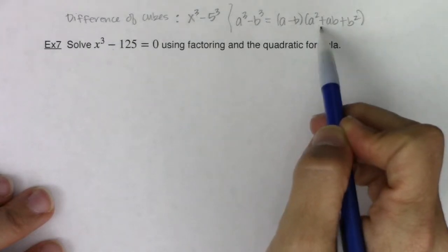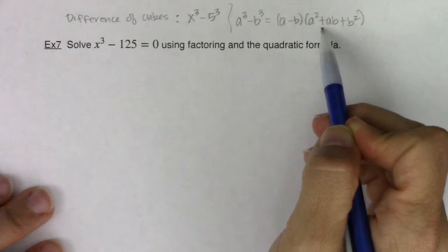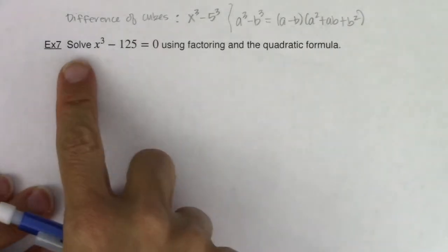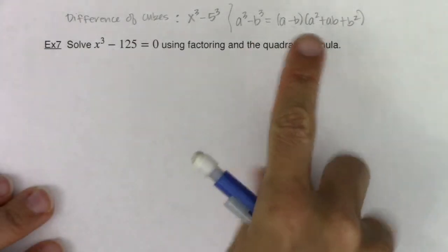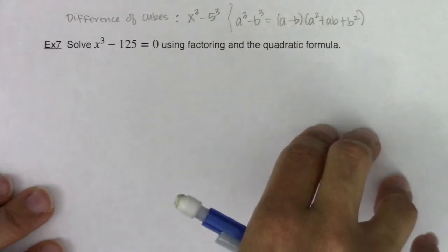And then both of these become prime. There's no way to factor them further than what we have here, which is not to say we can't solve them. We just won't be able to use factoring anymore. We'll have to either go to completing a square or the quadratic formula.